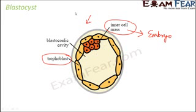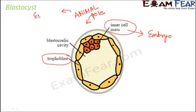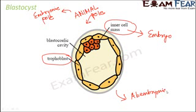The side of the blastocyst where the inner cell mass is attached is called the animal pole, also known as the embryonic pole, because the inner cell mass gives rise to the embryo. The opposite side is known as the abembryonic pole, sometimes also referred to as the vegetal pole. So animal pole and embryonic pole refer to the same region, while vegetal pole and abembryonic pole refer to the opposite side. These are the terms used when discussing types of cleavage.